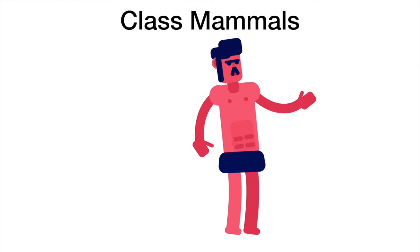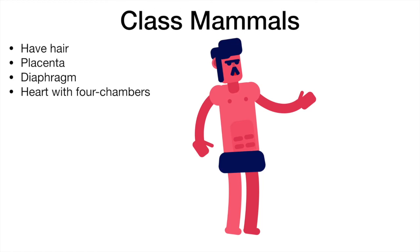We are mammals. All mammals have hair, have a placenta, have diaphragms, have hearts with four chambers, are homeothermic or warm-blooded, and have mammary glands to feed their young milk.